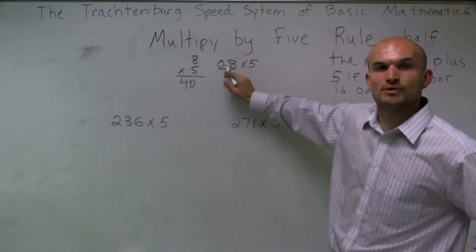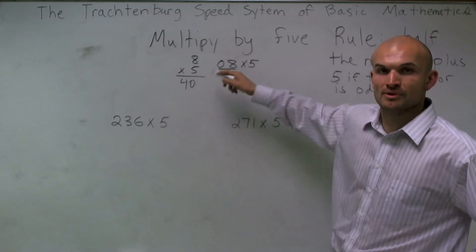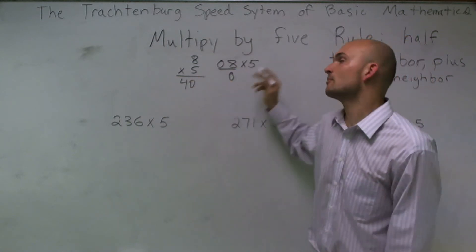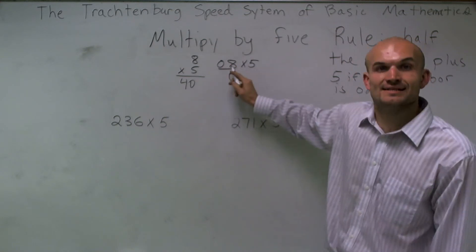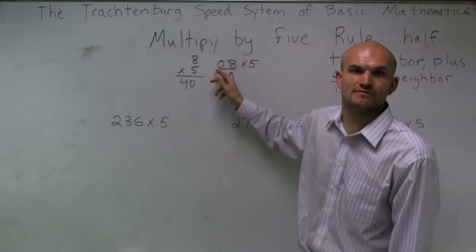Then we like to always put a 0 in front of our number. It doesn't change the value of the number, but we put the 0 in front. Therefore, we can use 8 as a neighbor, because 8 is the neighbor of 0.